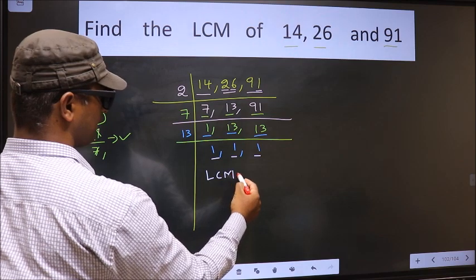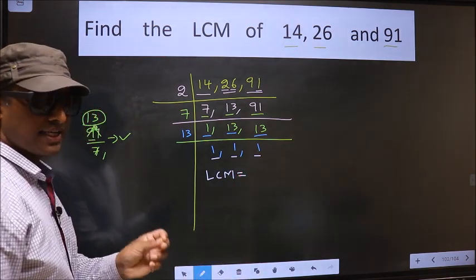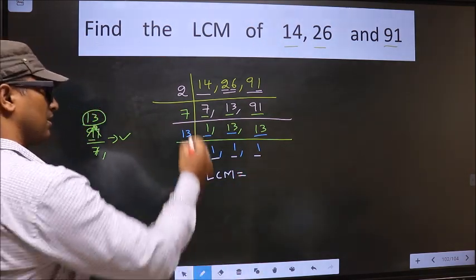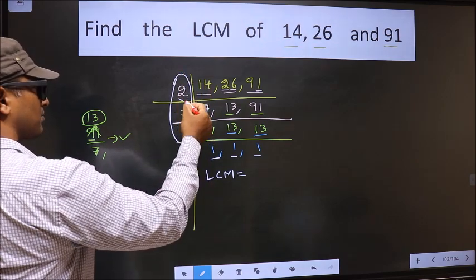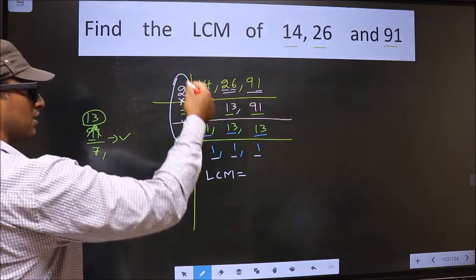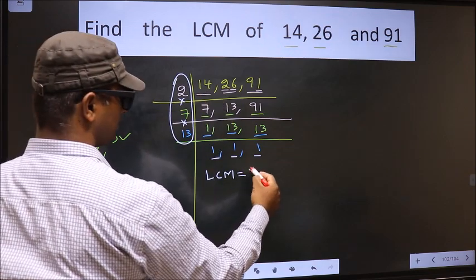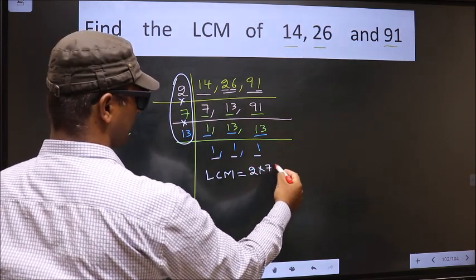So our LCM is the product of these numbers. Product of these numbers, that is 2 into 7 into 13.